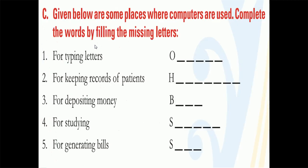Next question: given below are some places where computers are used. The places are written and one letter is given as a hint — you have to fill in the rest of the letters. First: for typing letters, the first character is O — it means office. Computers are used in offices for typing letters.